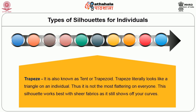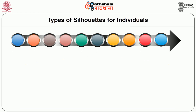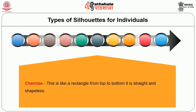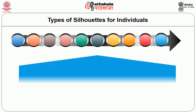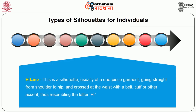Trapeze literally looks like a triangle on an individual, thus it is not the most flattering on everyone. This silhouette works best with sheer fabric as it still shows off no curves. Chemise type of silhouette is a rectangular kind of silhouette from top to bottom, and it is straight and shapeless. Fit and flare kind of silhouette has the shape of an A-line skirt. This silhouette is extremely common right now. H-line silhouette is usually a one-piece garment going straight from shoulder to hip and crossed at the waist with a belt, cuff or other accent, thus resembling the letter H.